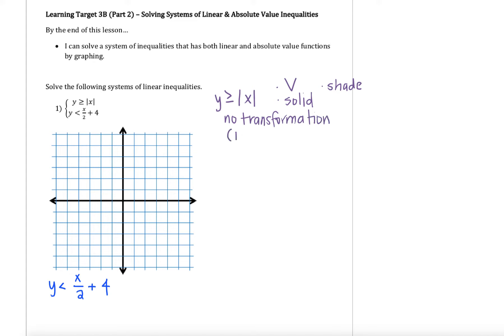Our start points for an absolute value are (1,1), (0,0), and (-1,1). So I'm going to go ahead and graph those. If I plot those, I will get this v-shaped graph with my vertex at the origin.